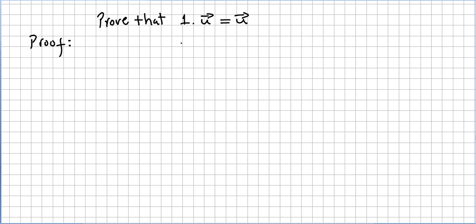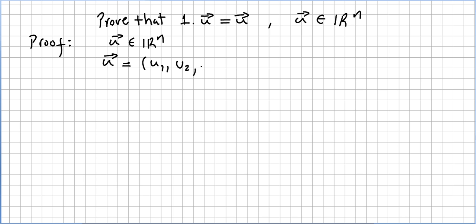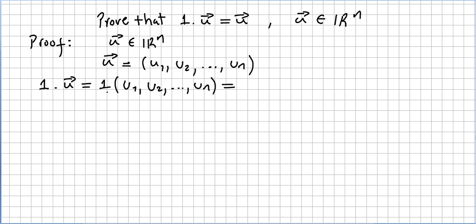Vector u is in R^n, so u is a vector in the vector space R^n. By definition, u will have the components u1, u2, up to u_n. Now the question is: what is 1 times u? So 1 times u will be 1 times u1, and a scalar times a vector is computed component-wise.